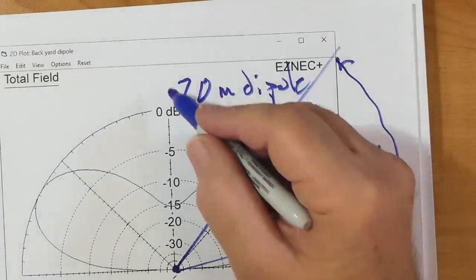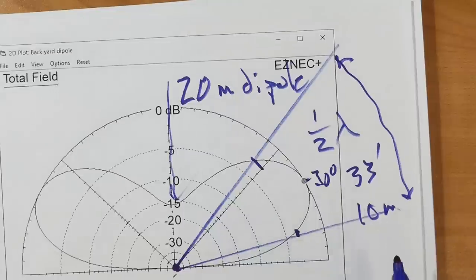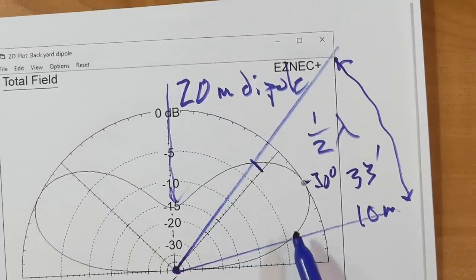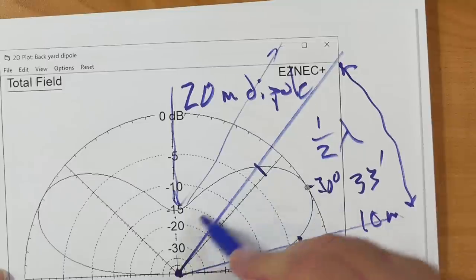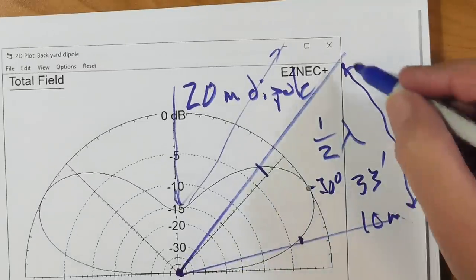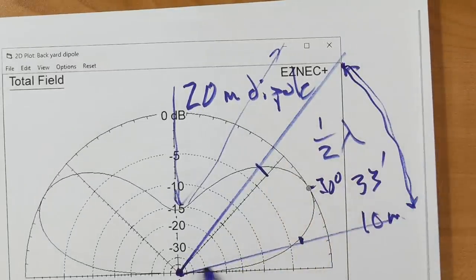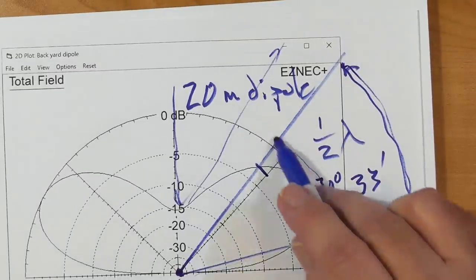But that doesn't take into effect the ground, which reflects the signal, some of the signal back up, thus strengthening the lobe. So you get very little coming down from above. So this is not a good NVIS antenna.